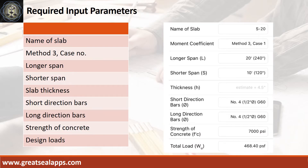Enumerate input parameters required: name of slab — S20; Case 1 panel design; longer span, 20 feet; shorter span, 10 feet; slab thickness, 4.5 inches; main bars, 1/2 inch diameter at grade 60; strength of concrete, 7,000 PSI; and total load, 468.4 PSF.